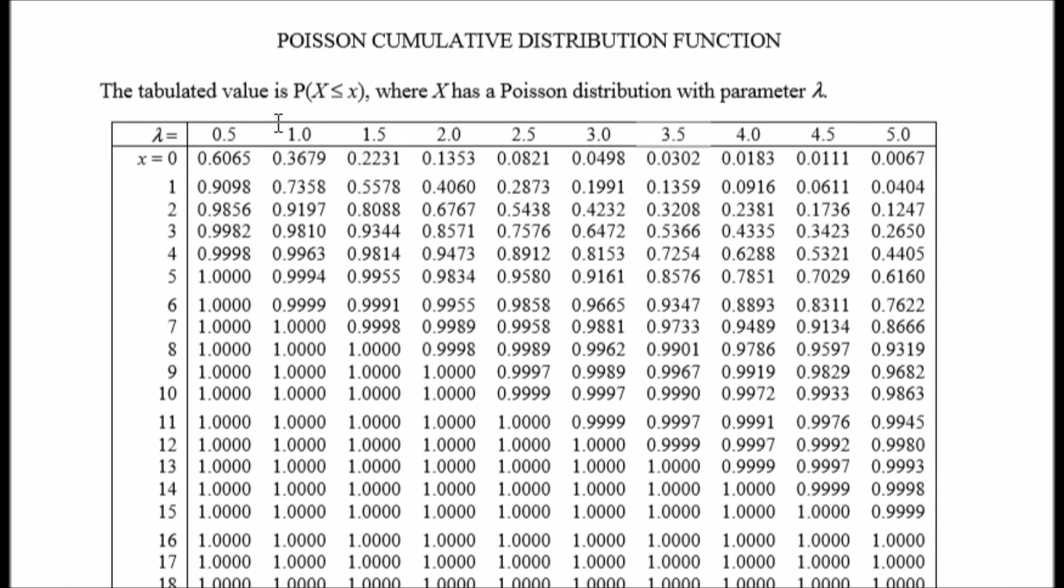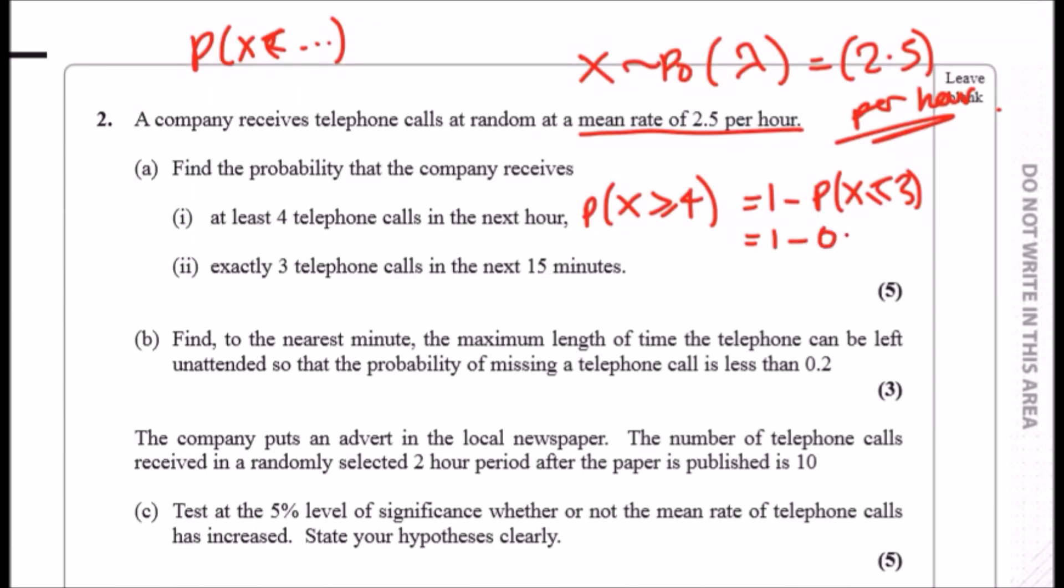Now doing that, quite easy. So one minus, now all we do is just go to the tables, find x less than or equal to three, and remember to follow the lambda. So look at the Poisson, find 2.5 and then go down to three, and it should be, and even tell you here, this is a tabulated value less than or equal to x. So this should be 0.7576, and that should give us one minus 0.7576 equals 0.2424.